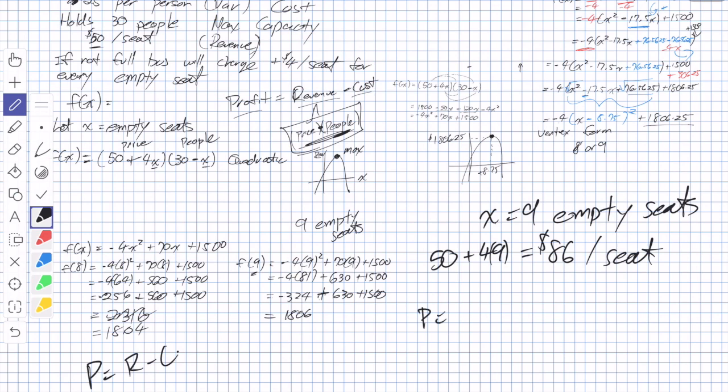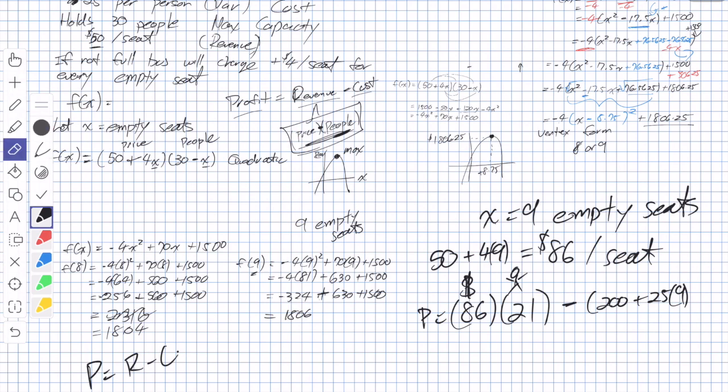So we used to charge $86 a seat. That was a super expensive bus ride. And now with that, we can start to figure out, remember I drew this before, profit is equal to revenue minus cost. So we've finally started to figure out our revenue, and now we can incorporate our costs. So I'm going to say profit is equal to revenue is going to be $86, so this is our price, times the number of people. How many people do we say we should have on the bus? It's a max 30 minus 9, so 21 people.